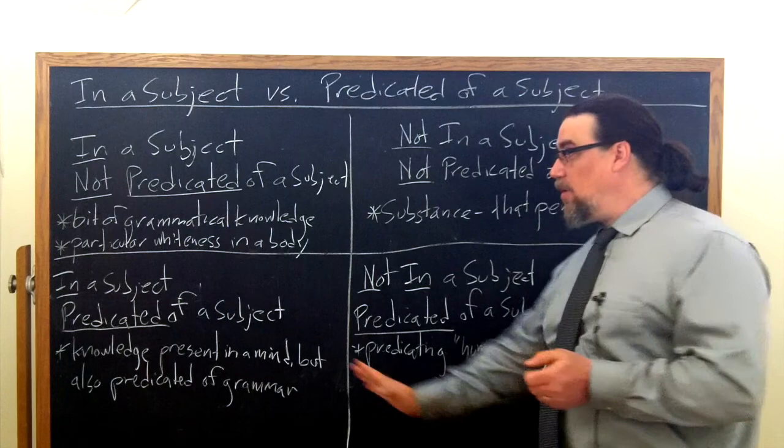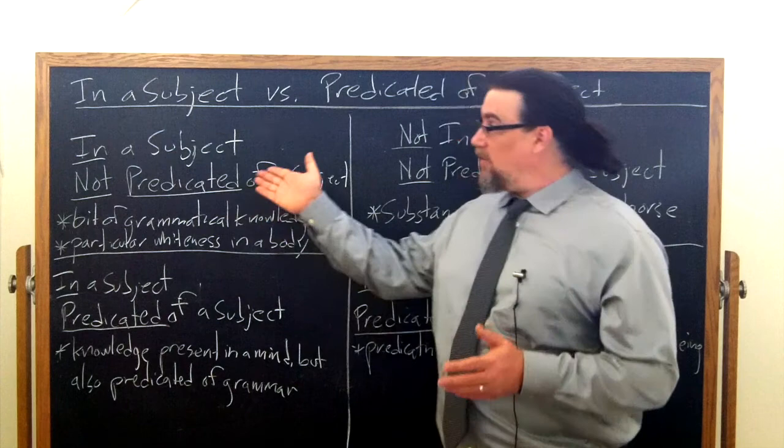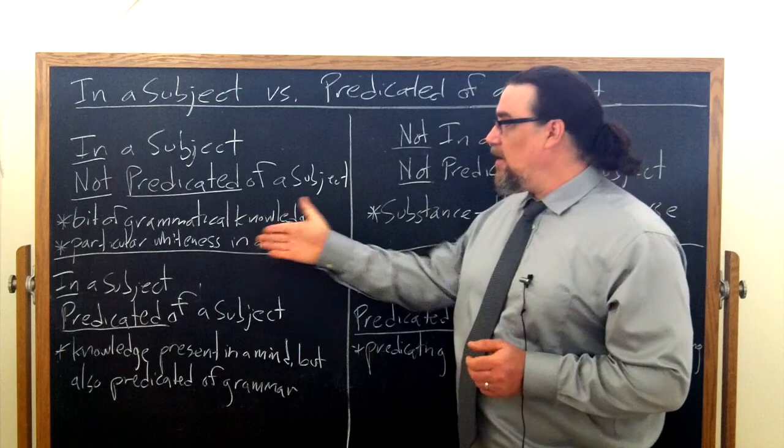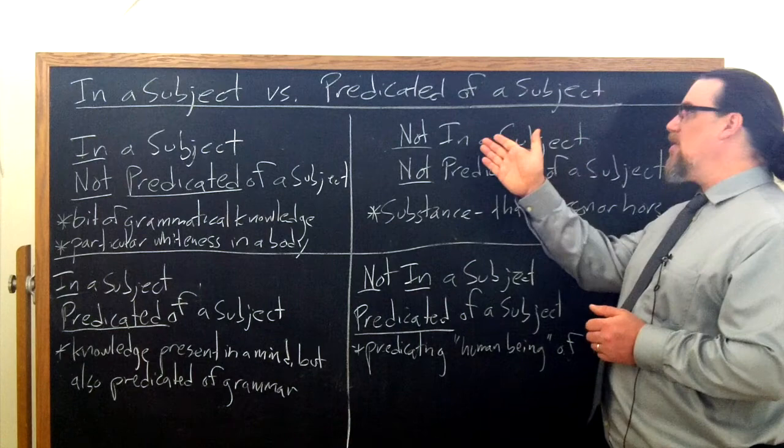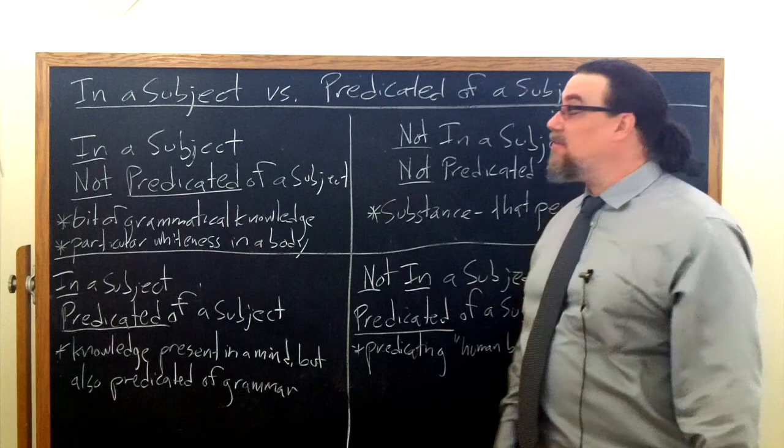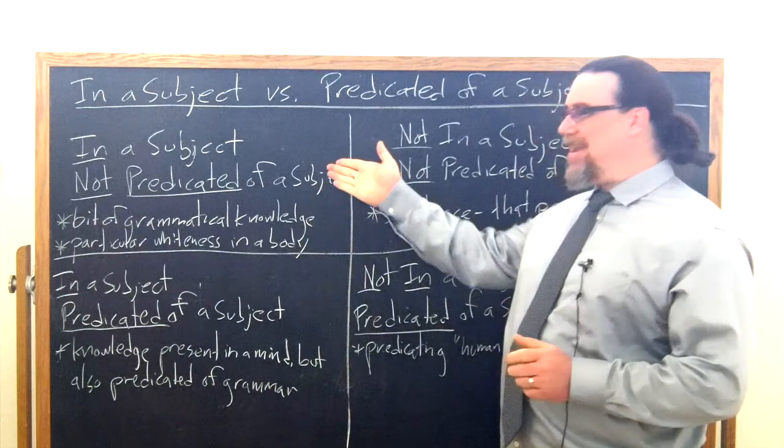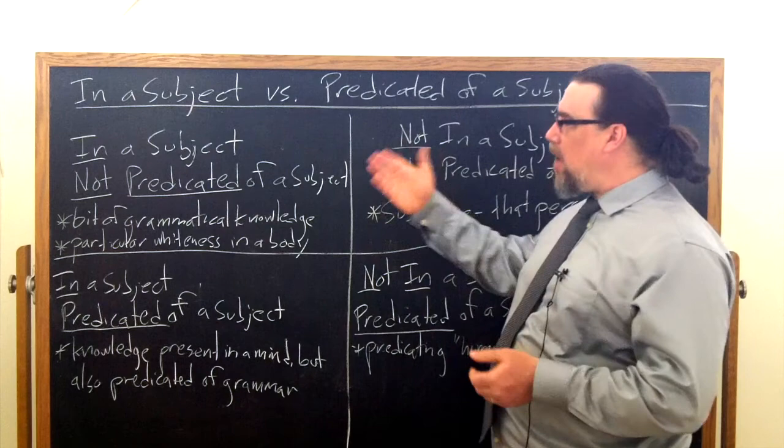And perhaps it's helpful to put it into something like this, a schema, where we can separate each of these off in something like a square and say, this quadrant over here represents, for example, in a subject but not predicated of a subject. This one over here is in a subject, predicated of a subject. Not in a subject, predicated of a subject. And then neither in a subject nor predicated of a subject. And if we compare it that way, I think a lot of it falls into place and it turns out not to be so mystifying. Before we look at these four sections, and I don't want to call them categories because category has a very specific meaning here that's connected with predication, what does he mean by predicated of a subject or in a subject?